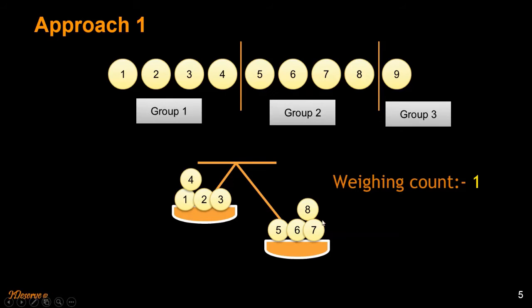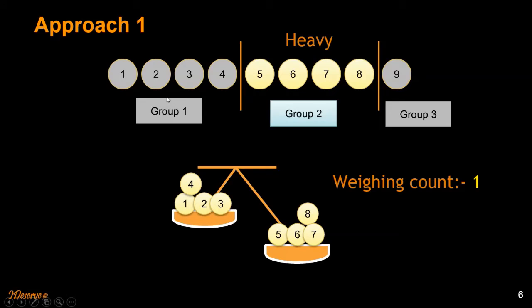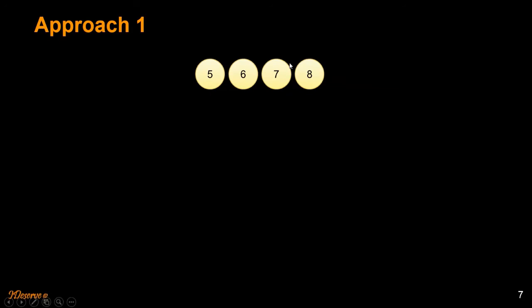Suppose group two is heavier and this is how it will look. What it means is the heavier ball is part of group two, so we don't need group one and group three. We will throw out group one and group three. What we have left is group two, which consists of four balls. The heavier ball is part of these four.